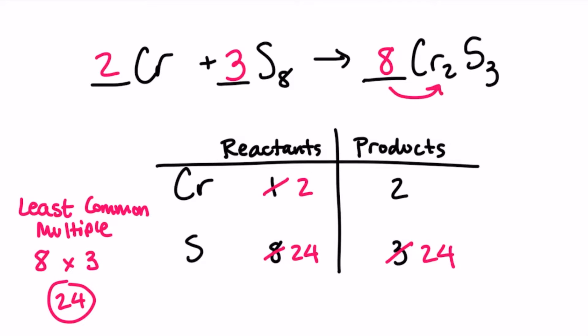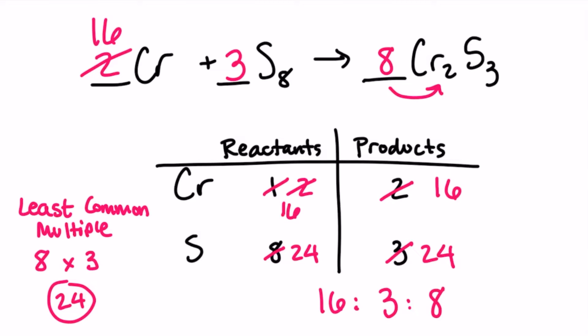However, the eight distributes to the chromium — eight times two — giving us 16 chromium in the product. Now I have to go back and look at the chromium in the reactant. If I change that two to a 16, that gives me 16 chromium in the reactant. Let me check that my coefficients are the lowest possible ratio: 16 to three to eight. That cannot be reduced, so we're good. Let me check my work: 16 chromium in the reactant, 16 chromium in the product, 24 sulfur in the reactant, 24 sulfur in the product.